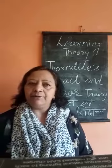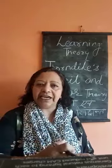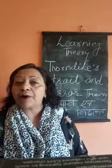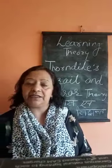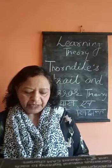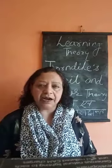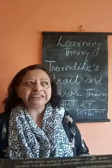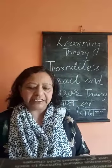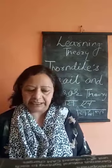Third is Badha (Obstacle), because the cat was inside the cage. Fourth is Random Movement — it means when the cat was inside the cage, it made many random movements trying to get out.